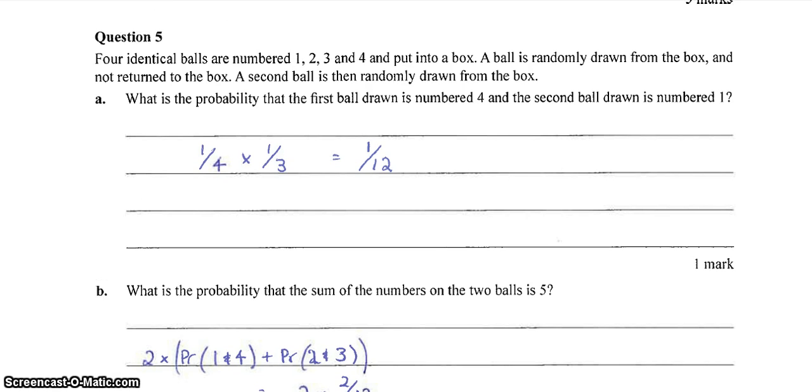Alright, question 5. We're now moving into some probability. This question was pretty straightforward. We've got four balls in a box, 1, 2, 3 and 4. If we draw out two balls without replacement, what's the probability that the first one is 4, the second one is 1? That's just going to be a quarter times a third, which is 1 on 12.